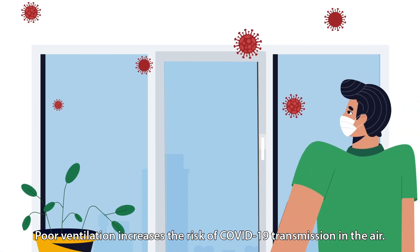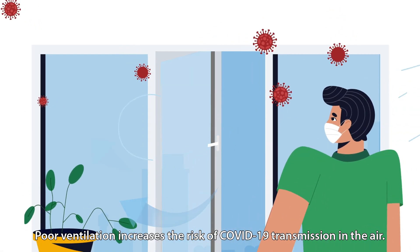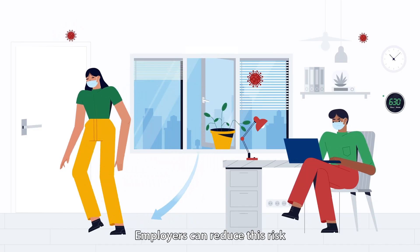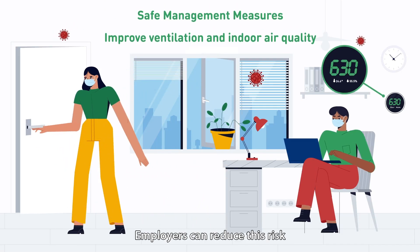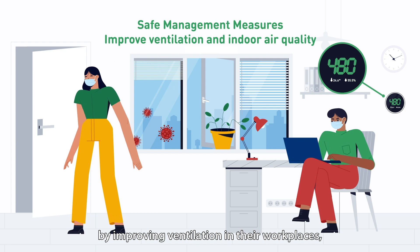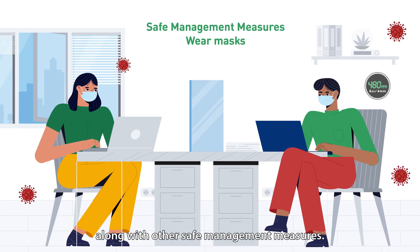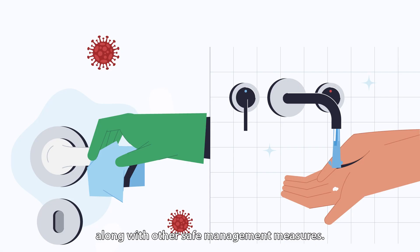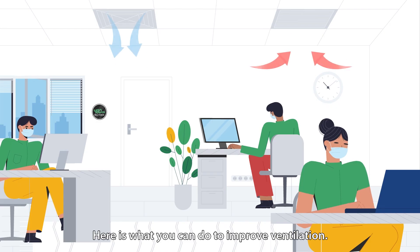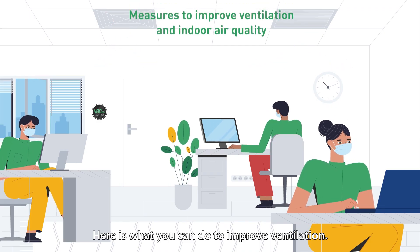Poor ventilation increases the risk of COVID-19 transmission in the air. Employers can reduce this risk by improving ventilation in their workplaces, along with other safe management measures. Here is what you can do to improve ventilation.